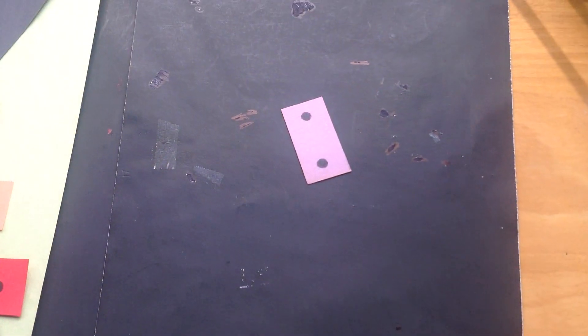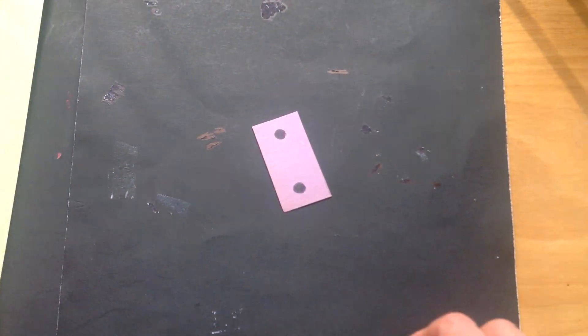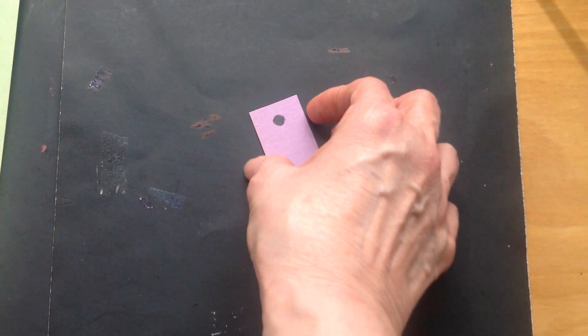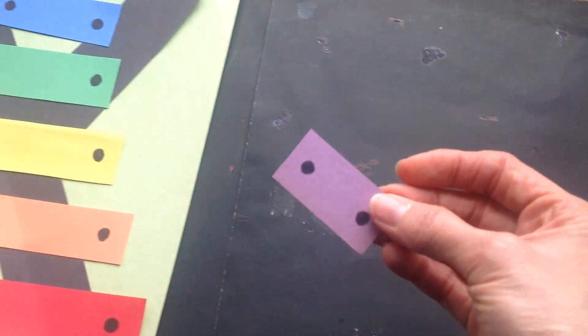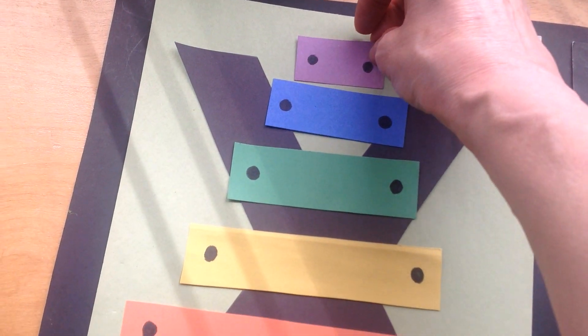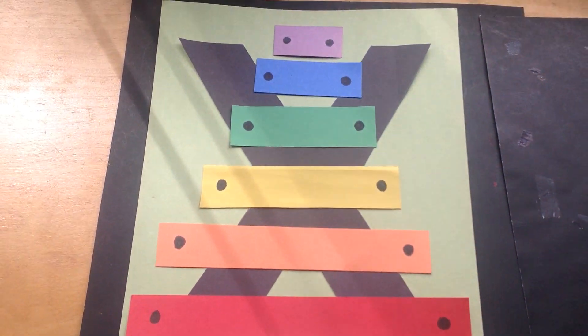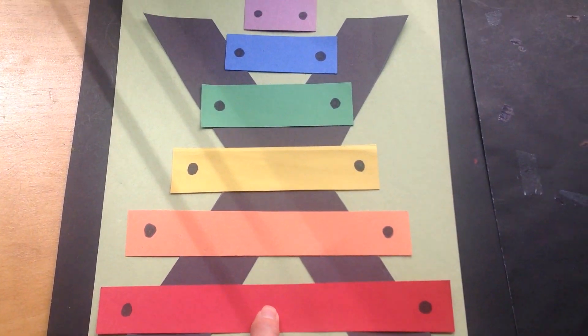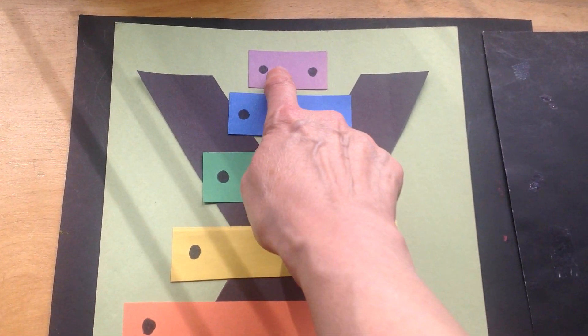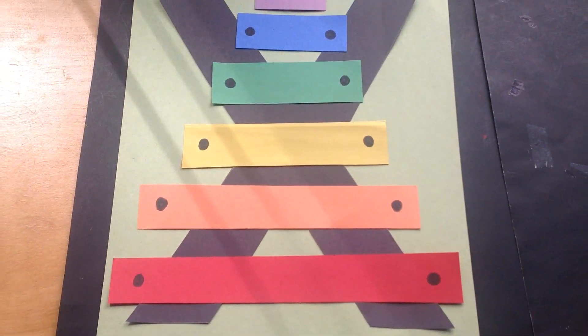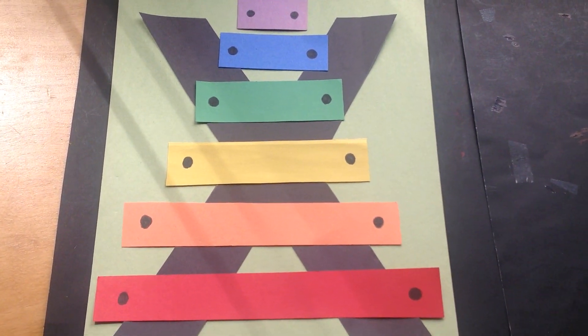And finally, what's our last chime? Morado. You got it. Purple. Alright, you see how we put the chimes in order from longest to shortest? Great job. Let's say the colors all together.